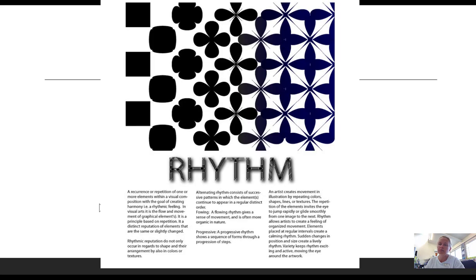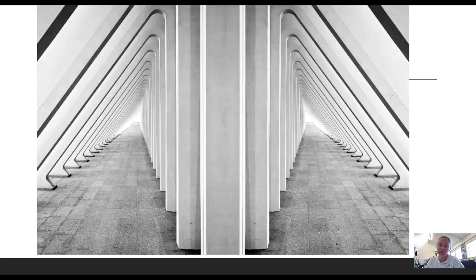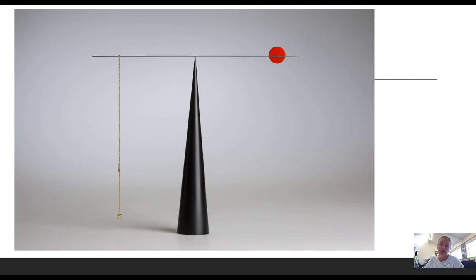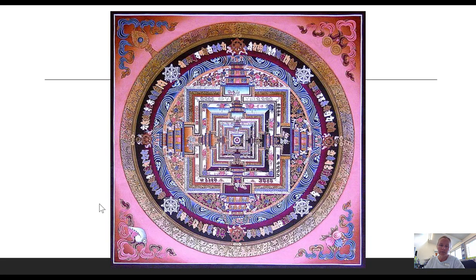So rhythm is the regular repetition of elements to create interest or cohesion. Balance, a distribution of visual weight on either side of the vertical axis. It can be symmetrical, asymmetrical, or radial. We'll look at that later on.